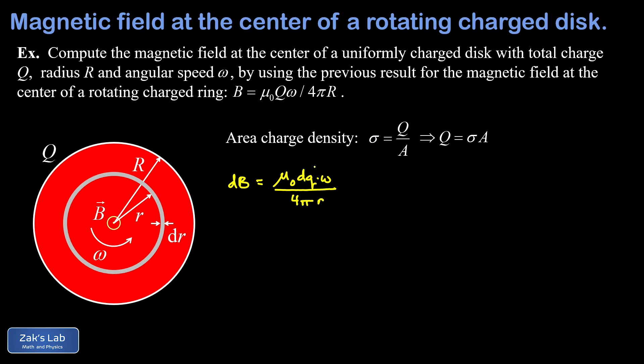So now we have to figure out how to write this dq in terms of the integration variable here, which is going to be r. And that's where this idea of area charge density comes into play. We can find dq by taking the uniform area charge density on this disk, we'll call that sigma, and multiplying by the area captured in that thin ring. So for now, I can just call that dA.